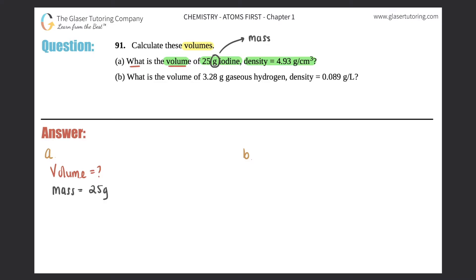And they gave us the density, so density is 4.93 grams per centimeter cubed. So it looks like we got density, we got mass, we got to solve for volume. So this is a straight density formula question: D equals m over V. Remember the hardest part for your density calculations is knowing the correct units. In this case they gave us gram per centimeter cubed, so the mass has to be in grams and the volume has to be centimeter cubed.